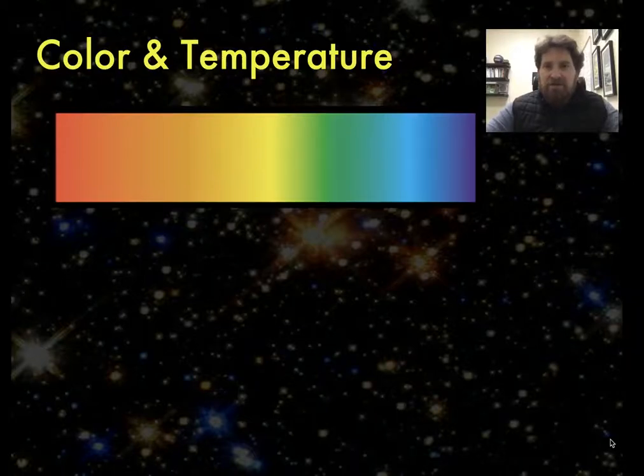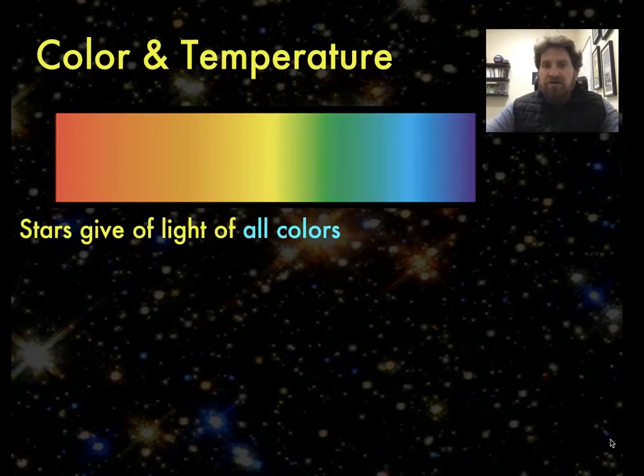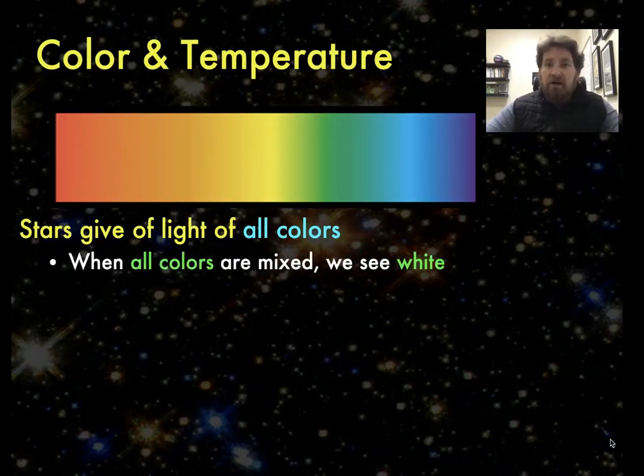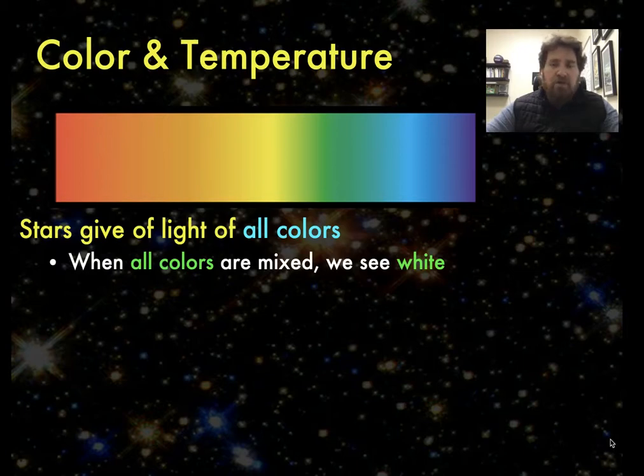Today we're going to talk about how we classify stars based on their temperature. All stars give off all colors of light, and when you mix all those colors together, our eye perceives that as white, which explains why, for the most part, all stars appear whitish in the sky.